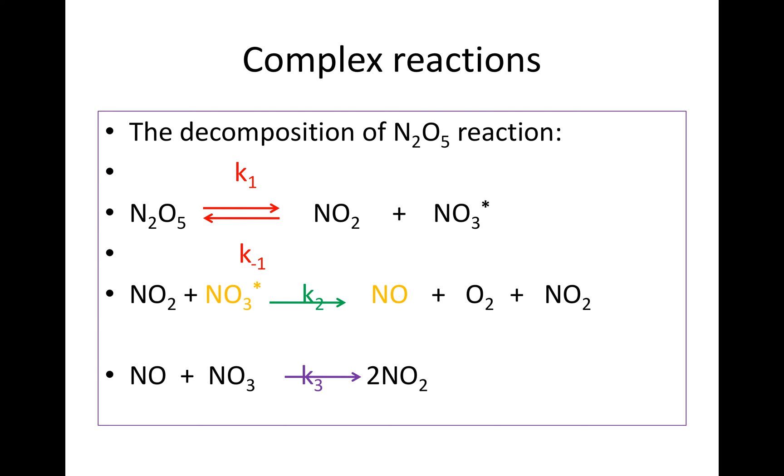NO, which is a free radical, and NO₃, which is also a free radical, may then associate to give you N₂O₅ with a rate constant k₃. That is thought to be the mechanism.